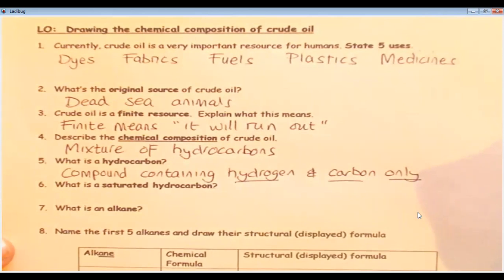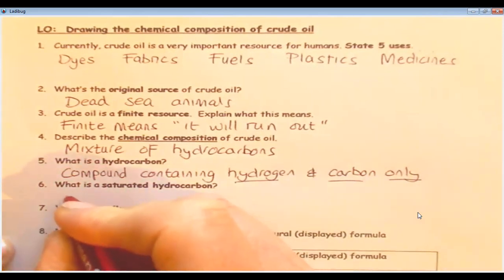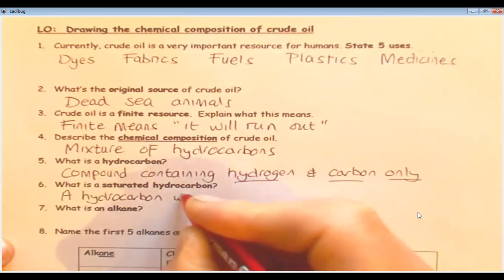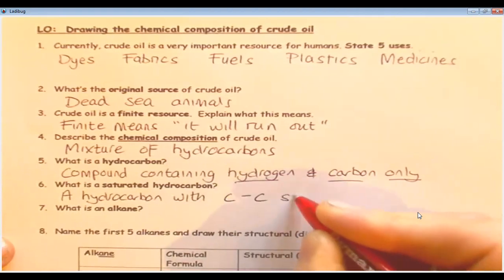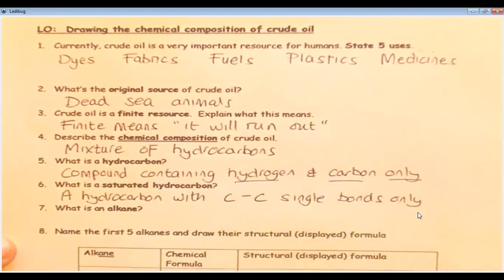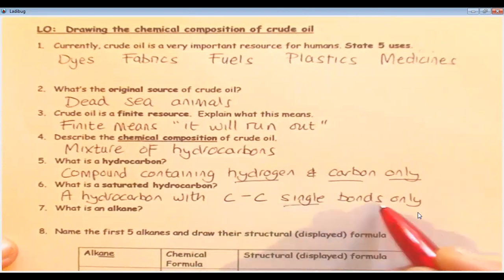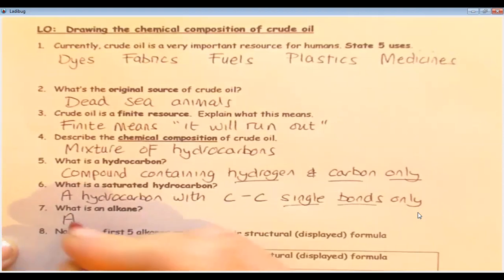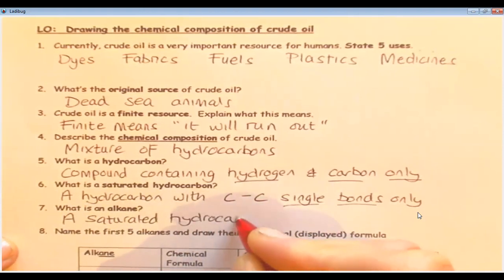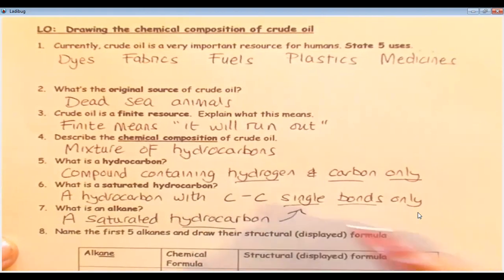And then an introduction to saturated hydrocarbons. What is a saturated hydrocarbon? It's a hydrocarbon with carbon to carbon single bonds only. There's two types of bonds which we had a look at in retrieval practice. They're single bonds and double bonds. And saturated hydrocarbons have these single bonds. And then the question says, what is an alkane? And an alkane is another name for a saturated hydrocarbon. So they contain carbon to carbon single bonds only.